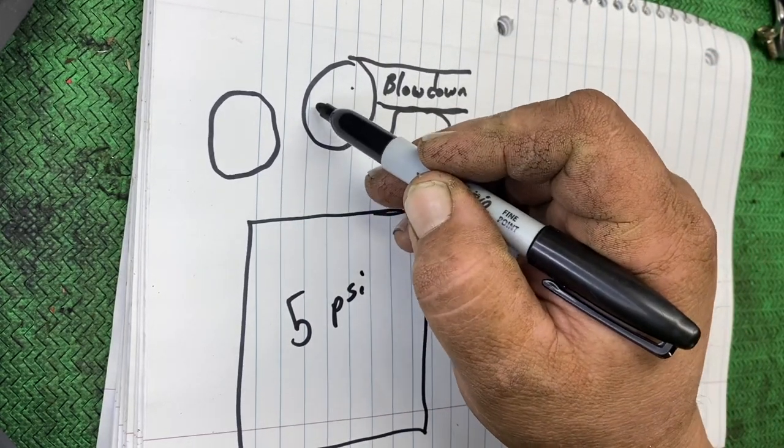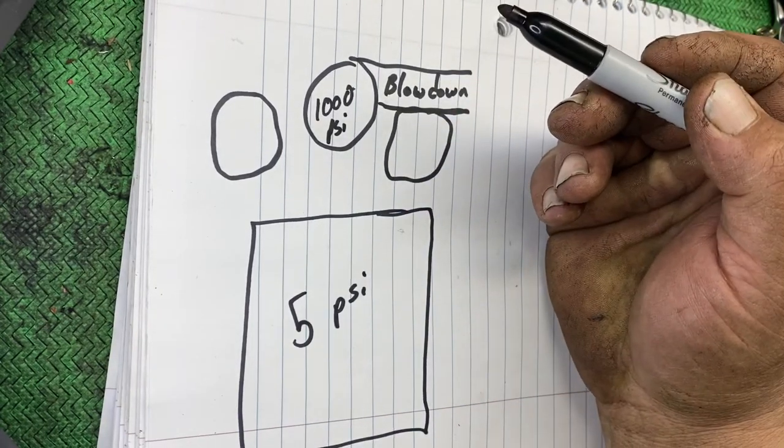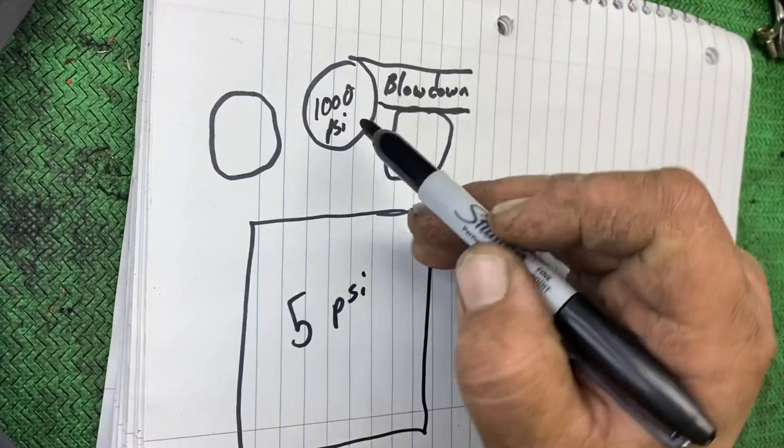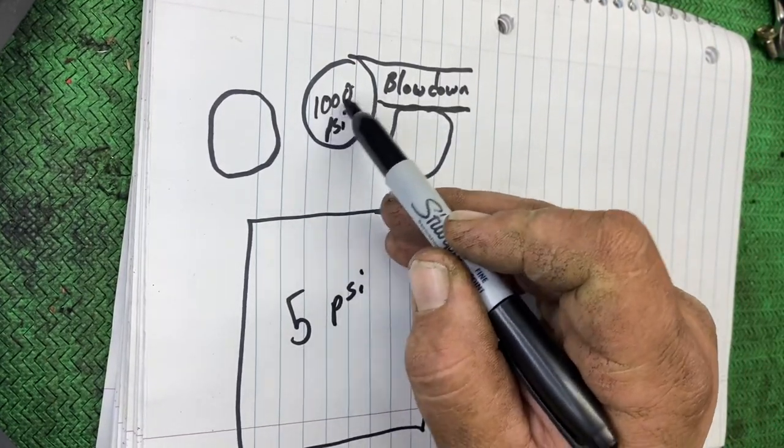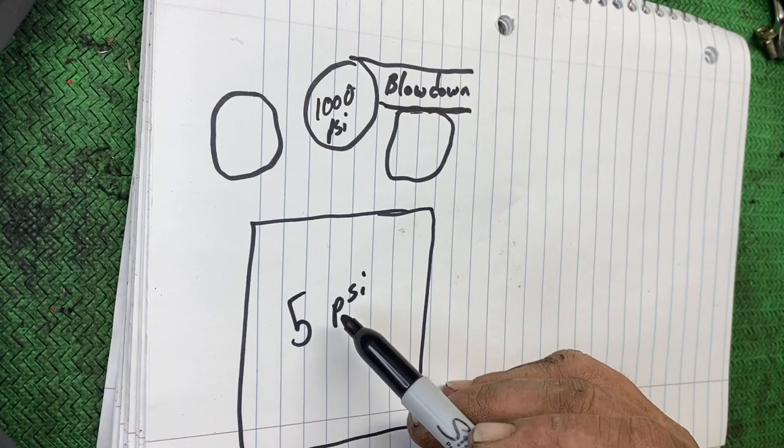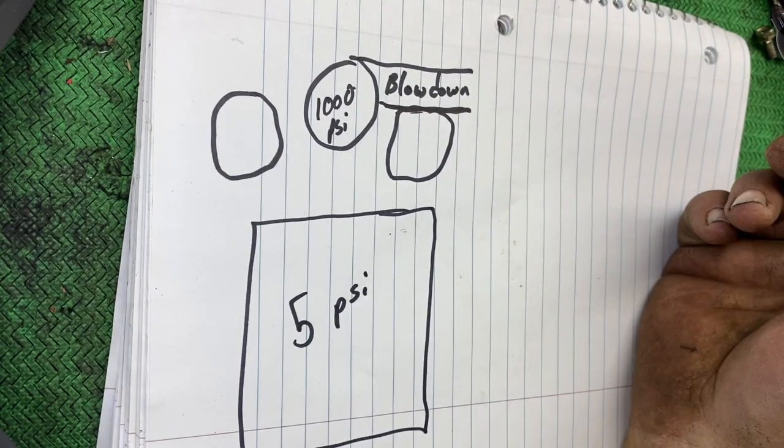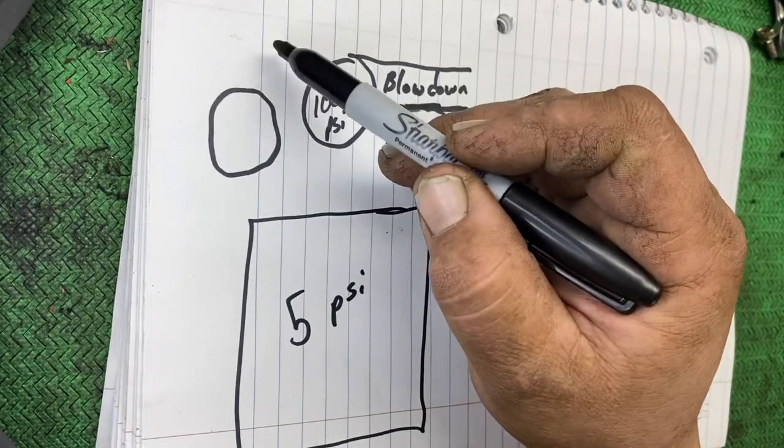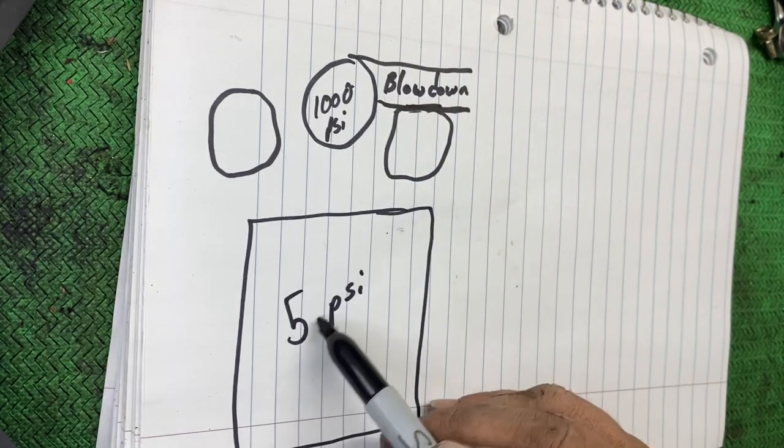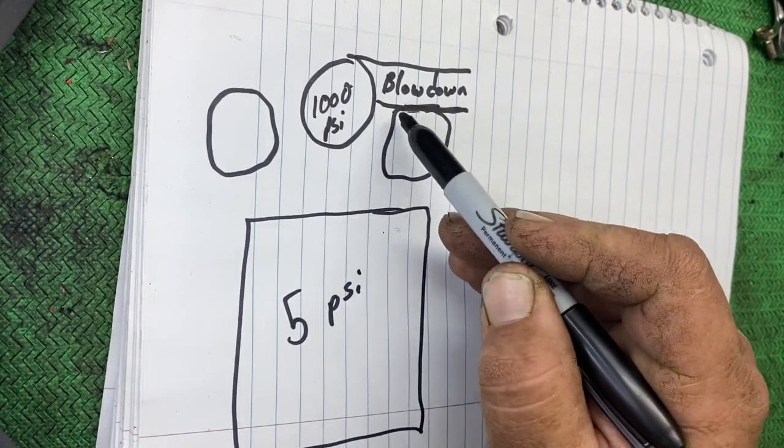Let's say you have a thousand psi, it could be more or less, we're using our imagination here. But basically in your blow down time you have to get your exhaust gases down to a point that when the transfer opens, the 5 psi is enough to start feeding your new charge up the transfers. This is the moment it starts.